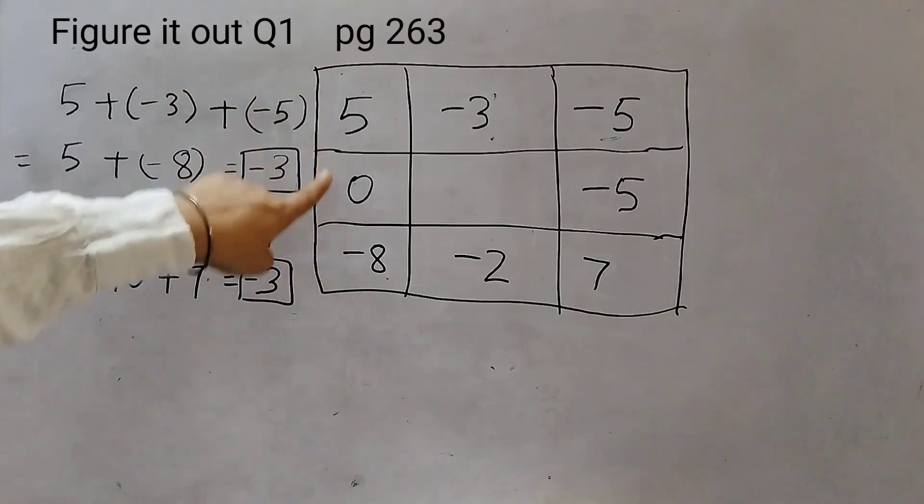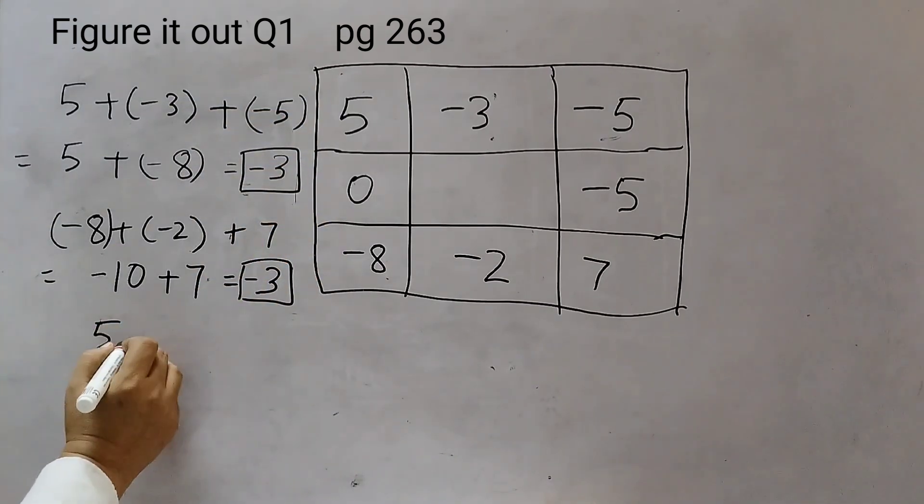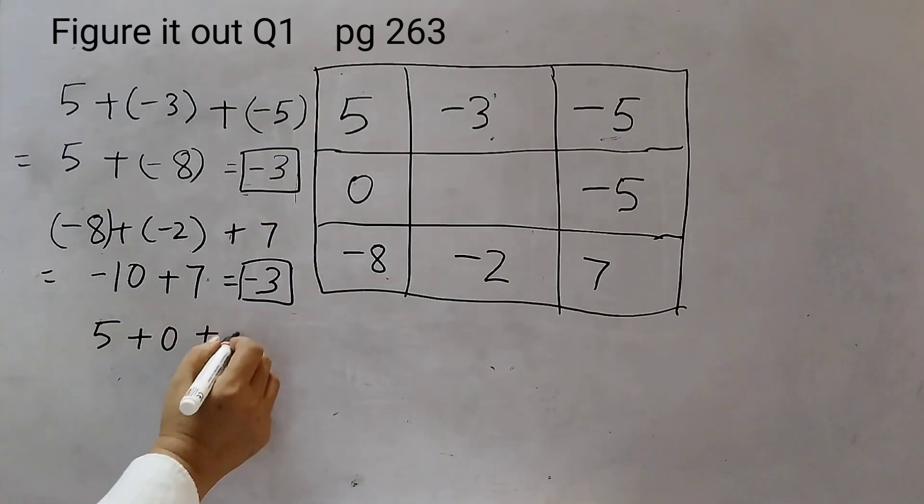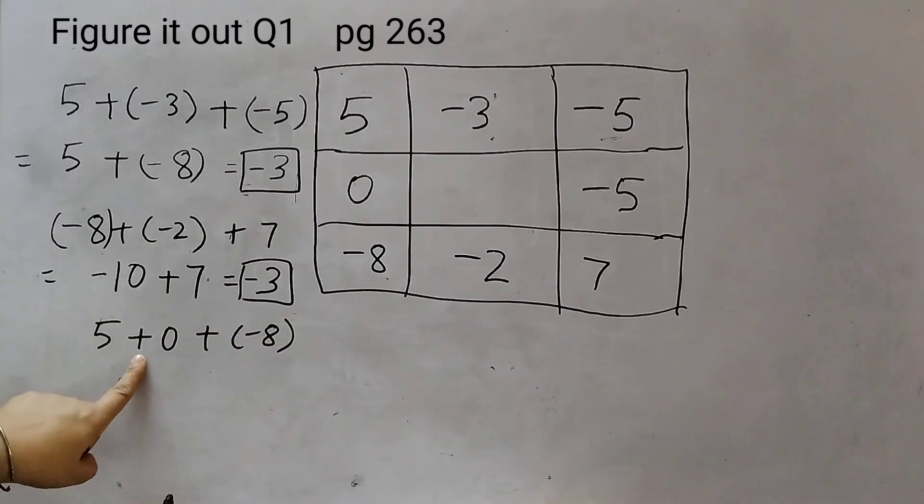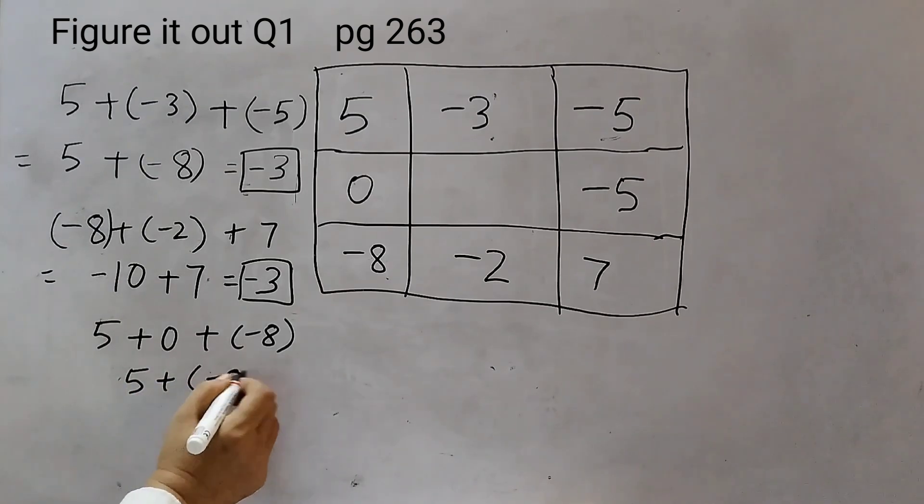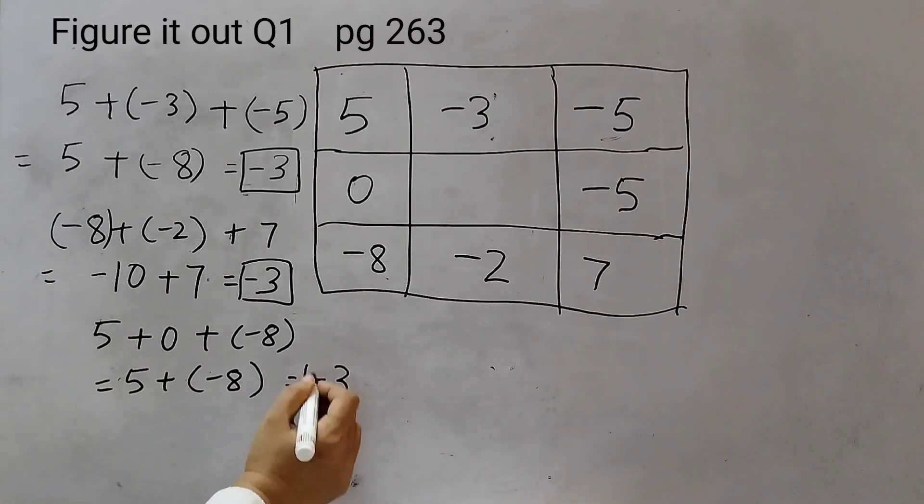Now, let's check the left column. 5 plus 0 plus minus 8. 5 plus 0 is 5, right? So, that is 5 plus minus 8. Now, you tell me, do we add or subtract? Correct. We are going to subtract. Because 5 is positive, 8 is negative. We are adding a positive number and a negative number. Actually, we are subtracting. So, 8 minus 5 is 3 and 8 is a bigger number. So, minus 3.